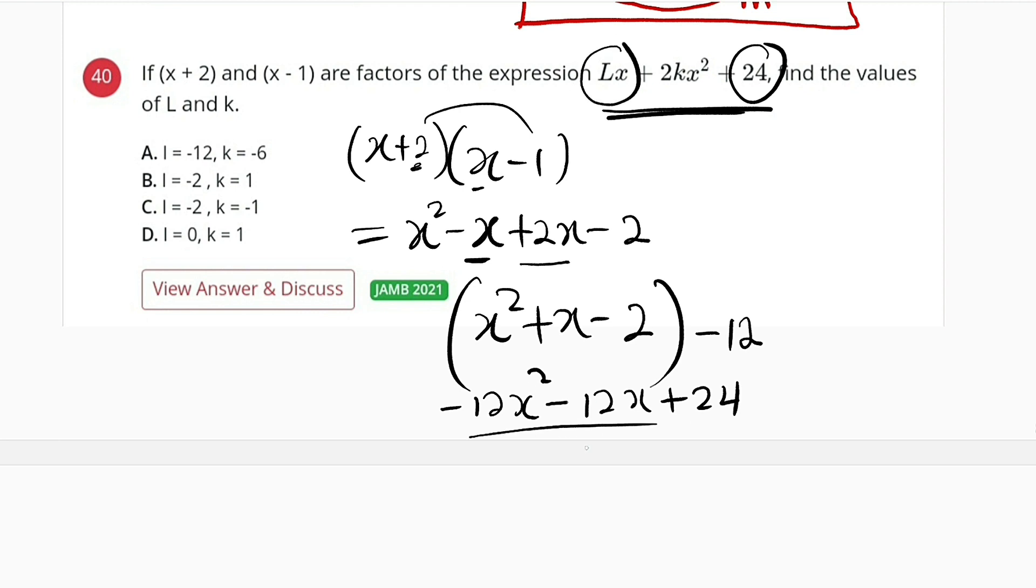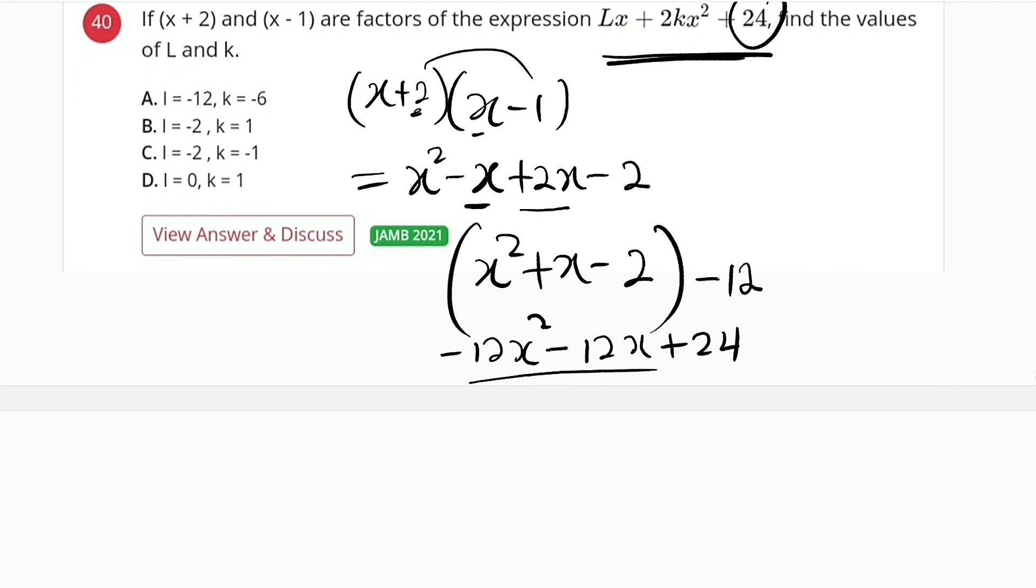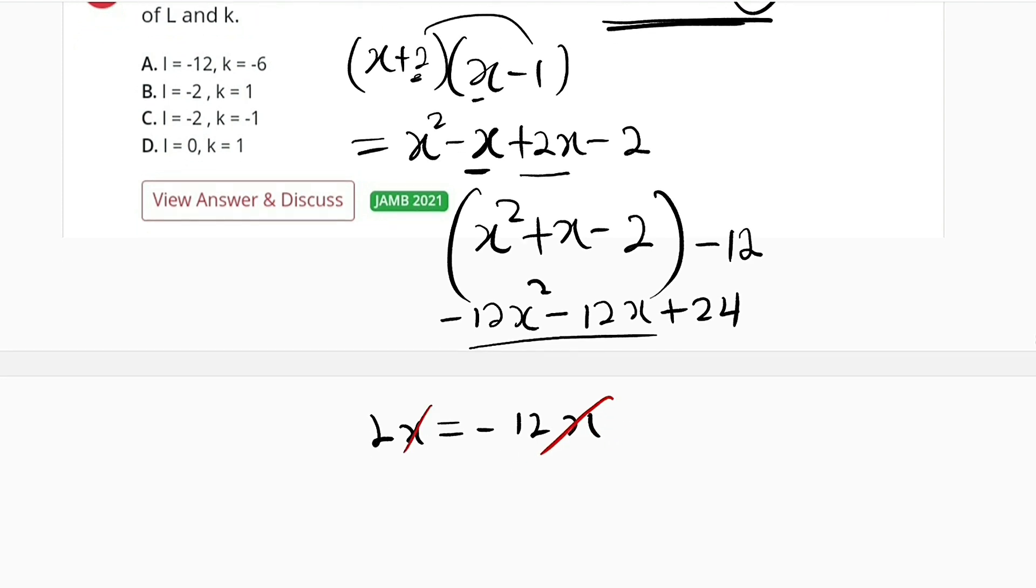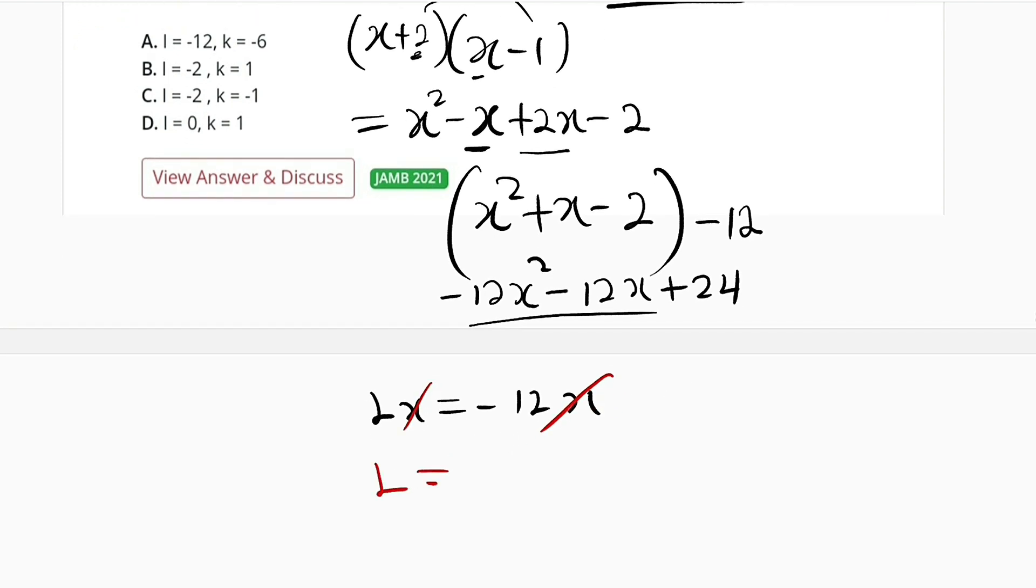Lx must be equal to negative 12x, which is the coefficient of x here. So now let us relate them together. Lx is equal to negative 12x. You can see that x will cancel x. Therefore, L is equal to negative 12.